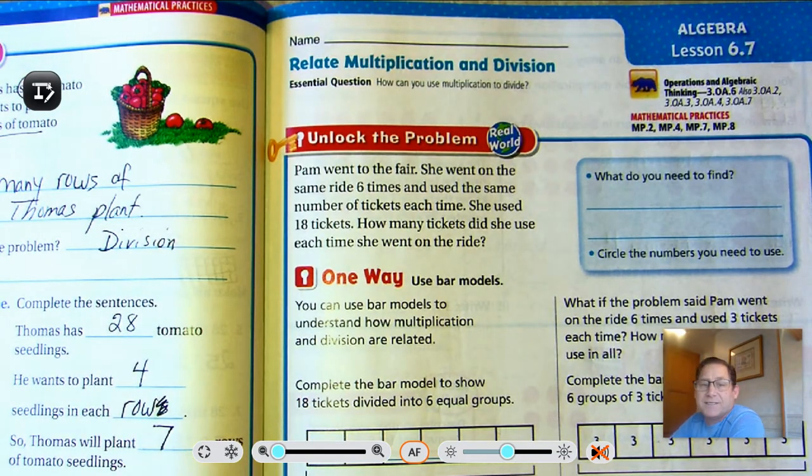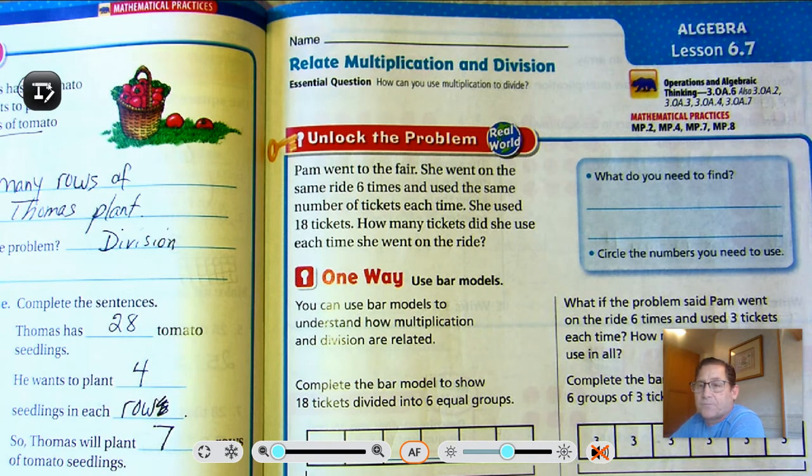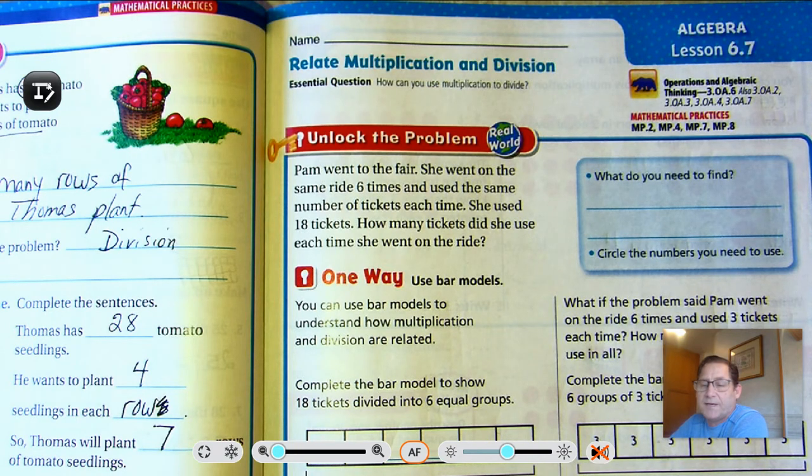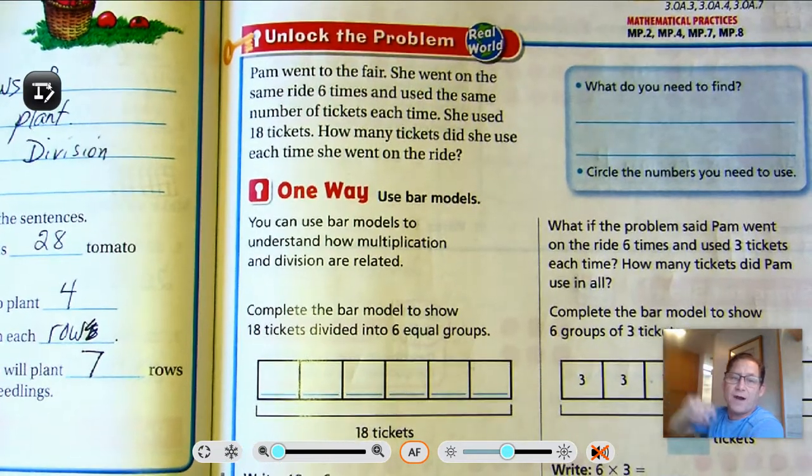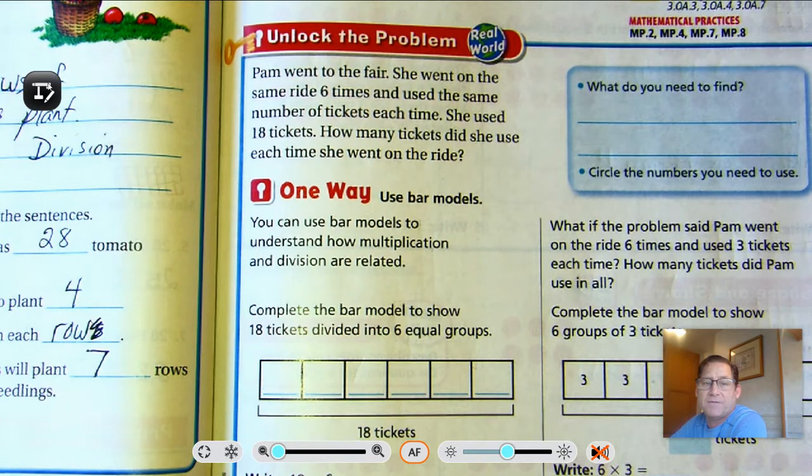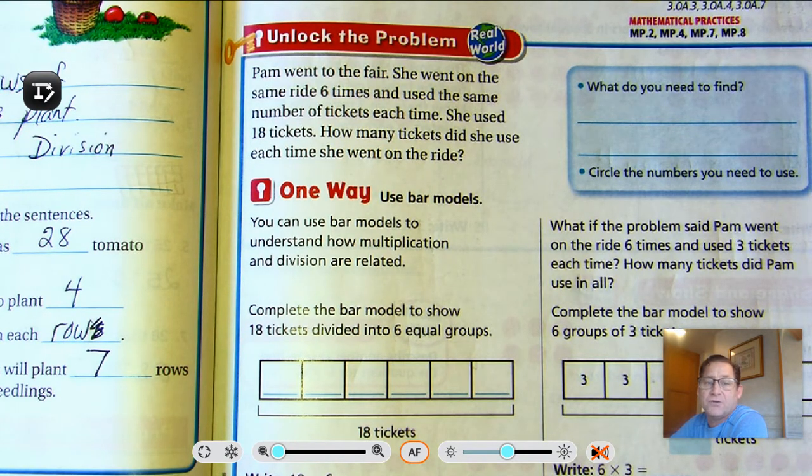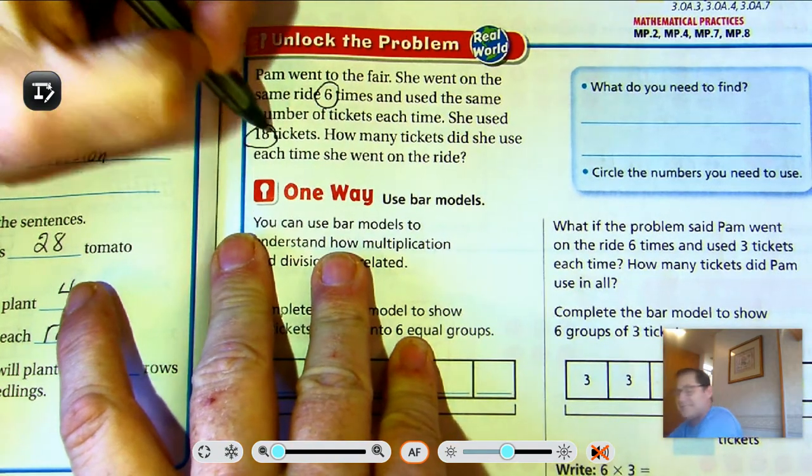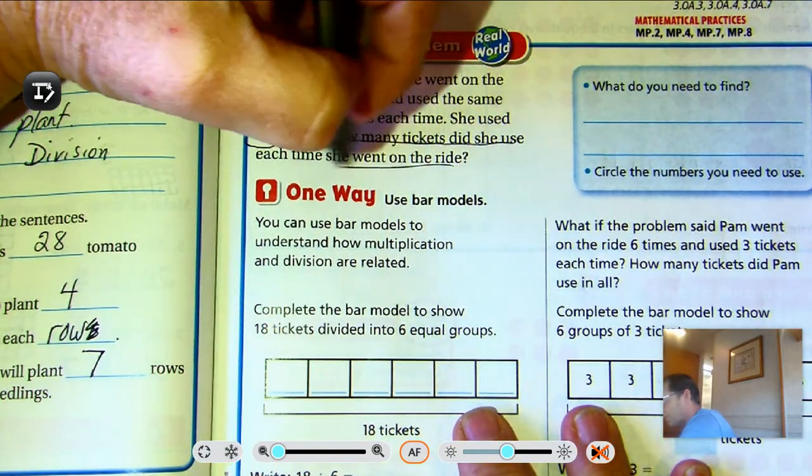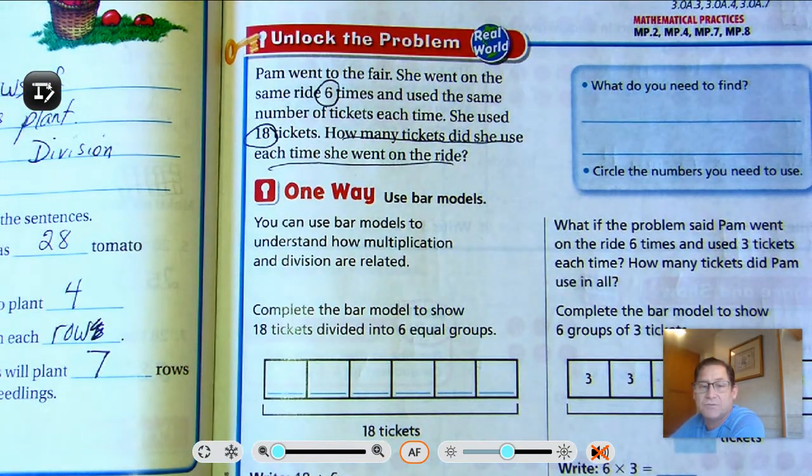Hello. Today we're talking about Lesson 6.7, Relate Multiplication and Division. The essential question that you should be able to answer at the end of our lesson today is, how can you use multiplication to divide? We're on page 245 of the third grade textbook. Let's go ahead and look at the Unlock the Problem. Pam went to the fair. She rode the same ride six times and used the same number of tickets each time. She used 18 tickets. How many tickets did she use each time she went on the ride? Well, she went on the ride six times and she had 18 total tickets.